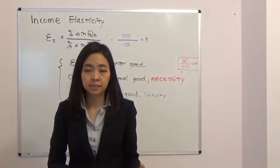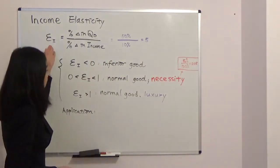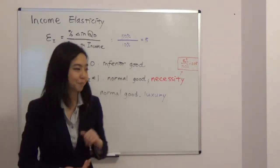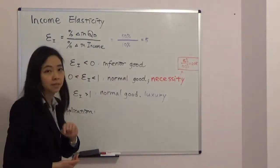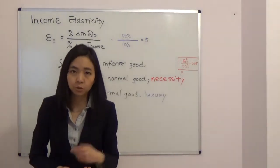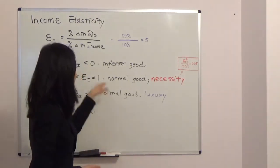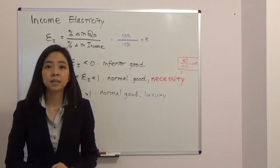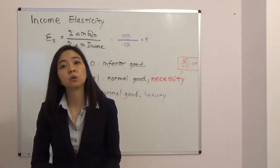So if your income elasticity is less than zero, is a negative number, then the good is an inferior good. Because your income goes up, then your quantity demanded goes down.